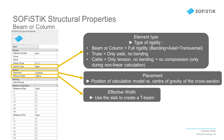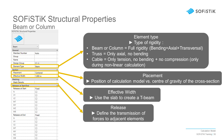If you want to use a T-beam profile while the physical beam is only a rectangular beam profile, you can set a participating width of the slab, which will be accounted for in the efforts. Finally, you can also define releases at both ends of the line, as well as to its adjacent members.